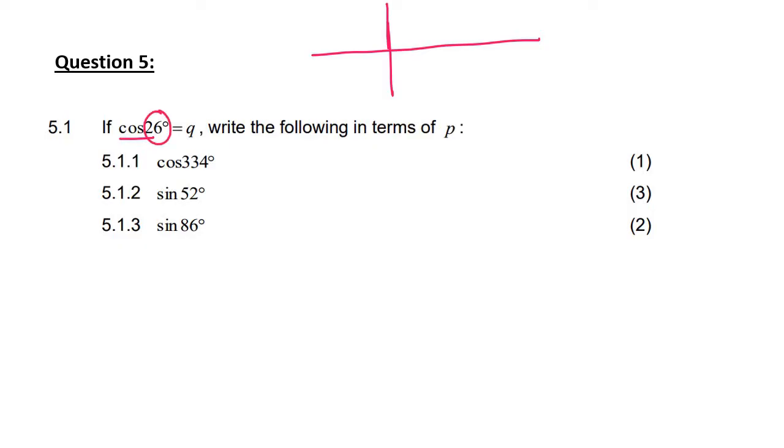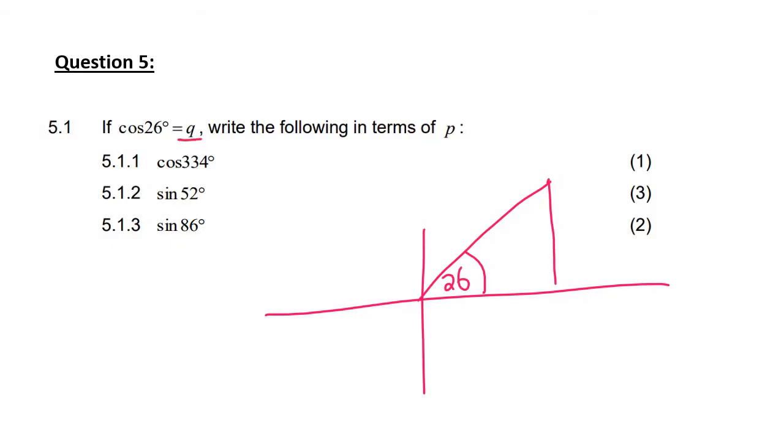They've said it's 26 degrees, that's quadrant one. What we do now is we pretend that this q is q over 1. We know that cos equals adjacent over hypotenuse, but it's also equal to x over r, whichever method you prefer. So we can put the q here and the 1 over here.